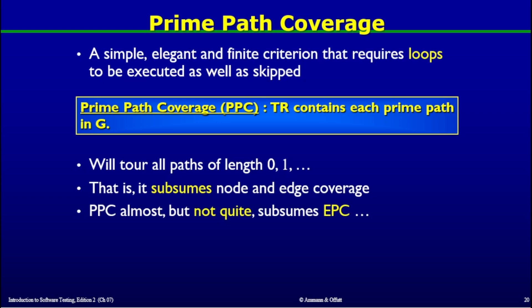This gives us our new definition: prime path coverage. It is a simple, elegant, and finite criterion that requires loops to be both executed and skipped. Prime path coverage, abbreviated as PPC, is defined such that the test requirement contains each prime path in the graph G. PPC subsumes node and edge coverage by touring all paths of length zero, one, and so on.